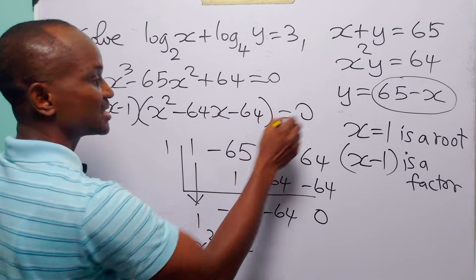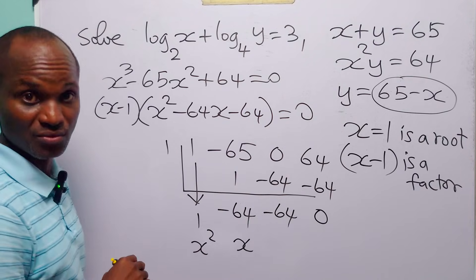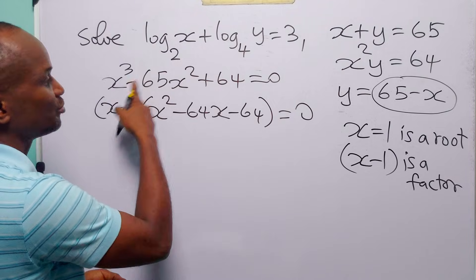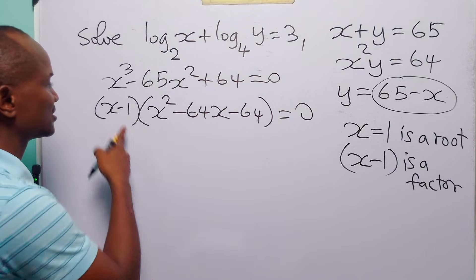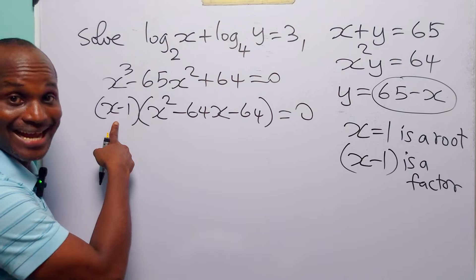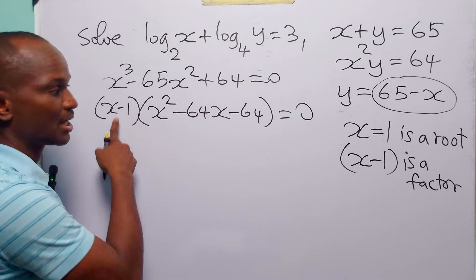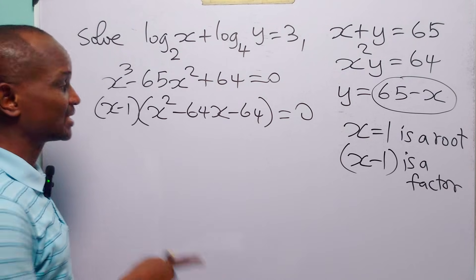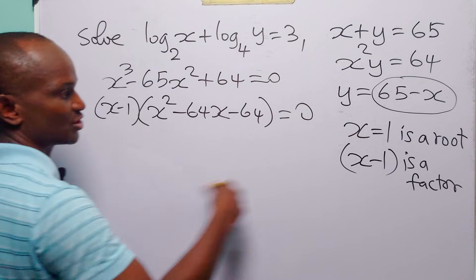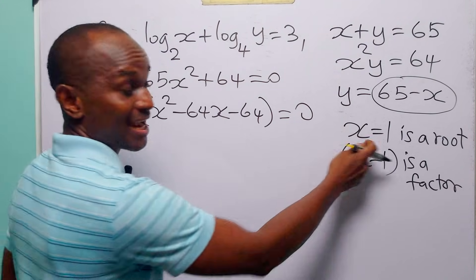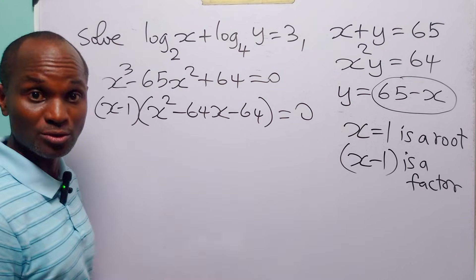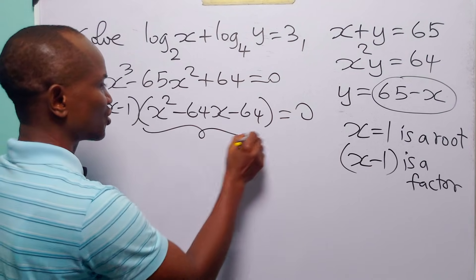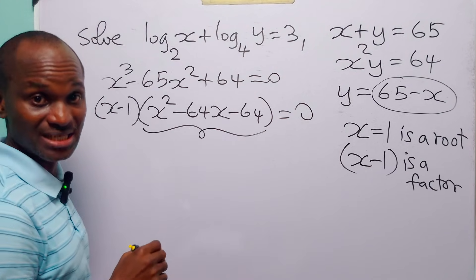So the cubic expression factorizes as x minus 1 multiplied by x squared minus 64x minus 64, and this is equal to zero. To solve this cubic equation we solve the linear equation and the quadratic equation separately. From the linear factor we already have x equal to 1.